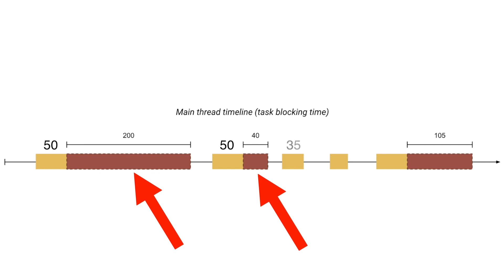The third task duration is 35 milliseconds and the fourth task duration is 30 milliseconds. As these tasks' durations are less than 50 milliseconds, there won't be any blocking time. Finally, the fifth task duration is 155 milliseconds, and if we remove the 50 milliseconds, then the blocking time is 105 milliseconds.